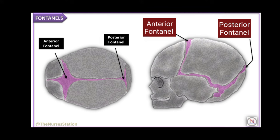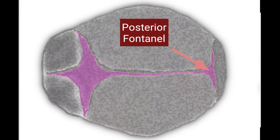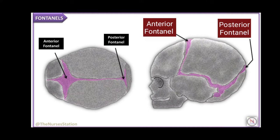The posterior fontanelle is formed by the junction of three suture lines — the sagittal suture anteriorly and the lambdoid sutures on either side. It is triangular in shape and measures about 1.2 by 1.2 centimeters. Its floor is membranous but becomes bony at term.